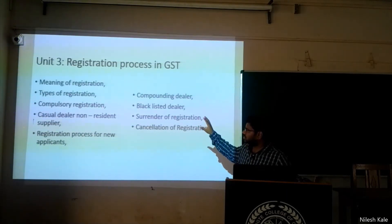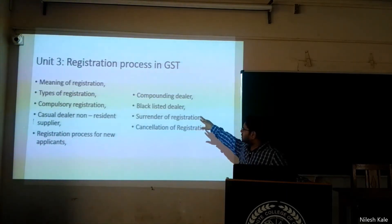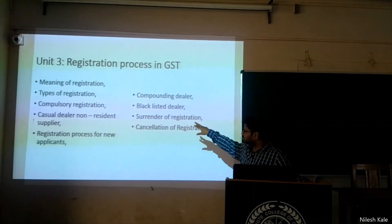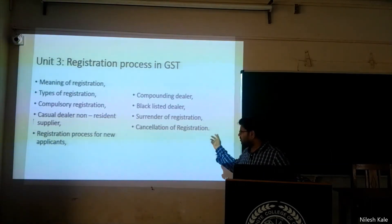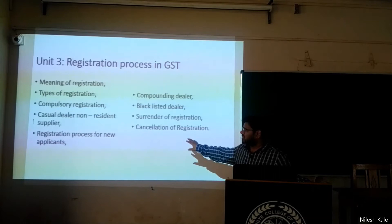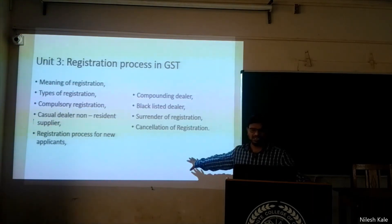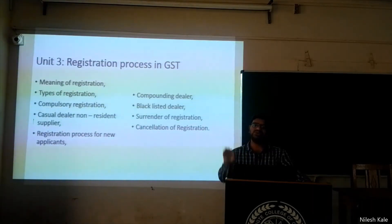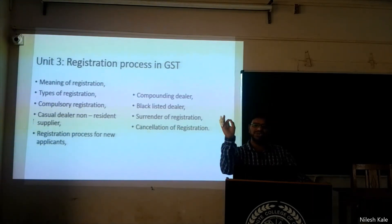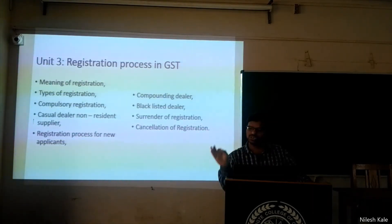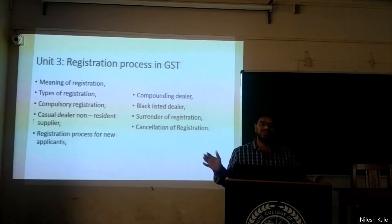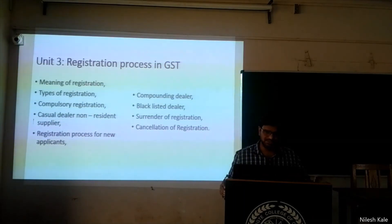This is unit number four. It covers compounding dealers and blacklisted dealers, surrender of registration, and cancellation of registration. This chapter is based on sections 22 to 30 of the CGST act and relevant rules.